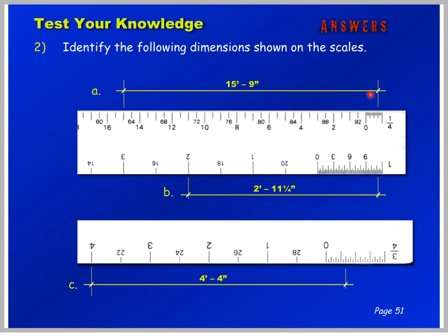Question 2: measure this line. From the zero mark, we've got 15 feet over here — you have to interpolate between the 14 and the 16 to get 15. And from the zero mark we've got 3, 6, and 9 inches. Final answer: 15 foot 9. B: two foot eleven — 1, 2 going this direction, and from the zero mark portion of a foot we've got 3, 6, 9, 10, 11, and a quarter of an inch. Final answer: 2 foot 11 and 1/4. For C, we've got four feet — 1, 2, 3, 4 — and from the zero mark, we've got 1, 2, 3, 4 inches. Final answer: 4 foot 4.